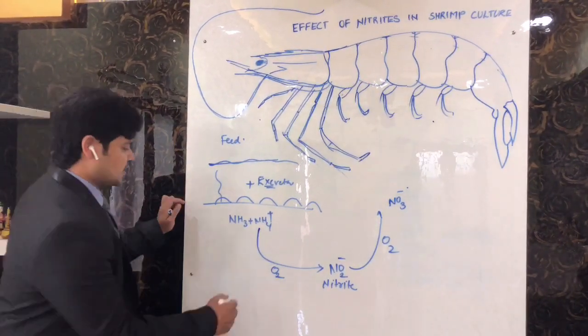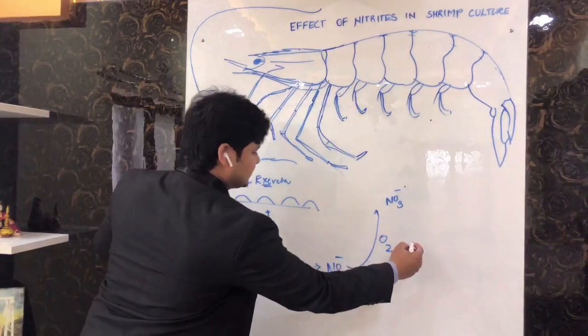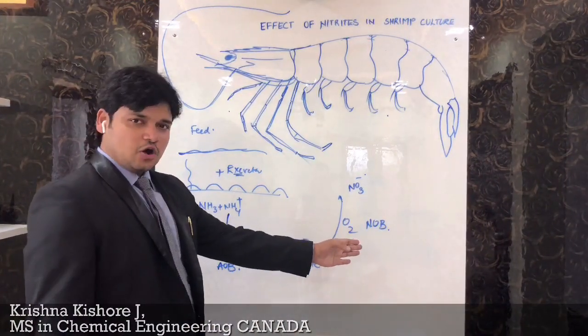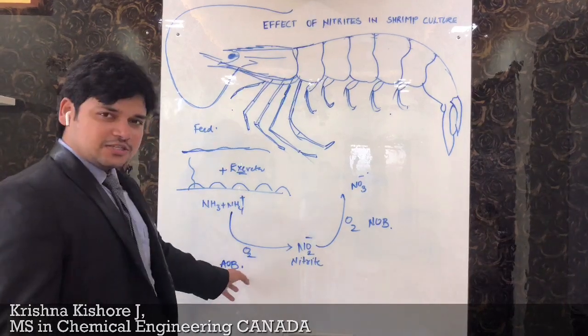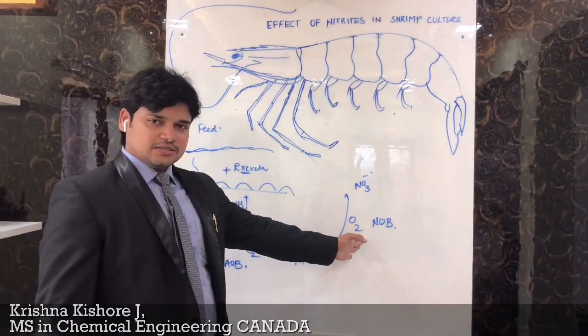Nitrite to nitrate is nitrite oxidizing bacteria. The ammonia oxidizing bacteria is otherwise known as Nitrosomonas and the NOB is Nitrobacter.